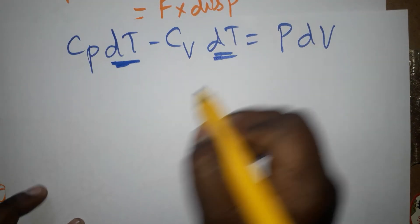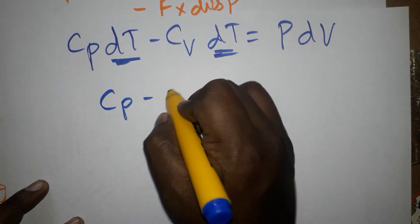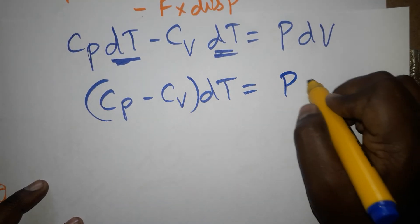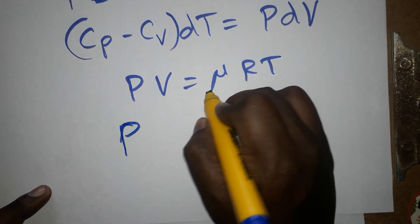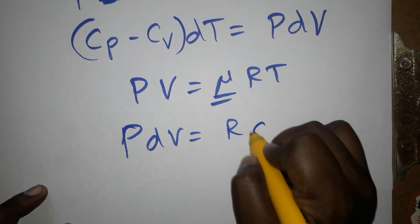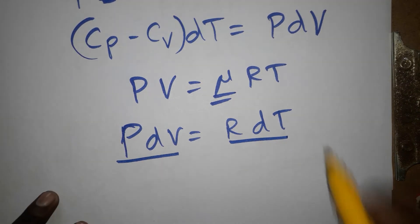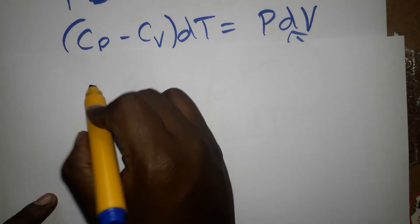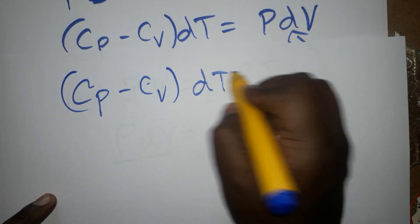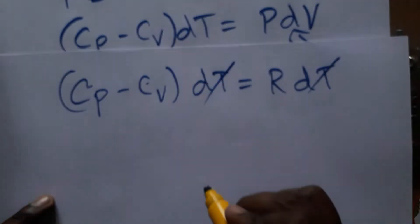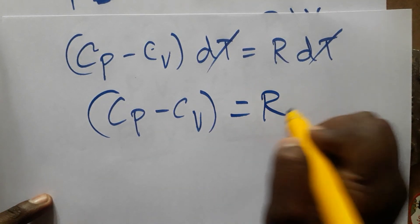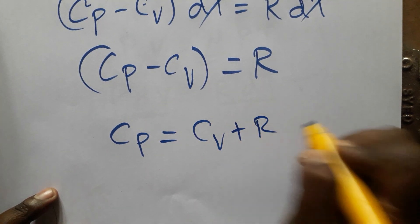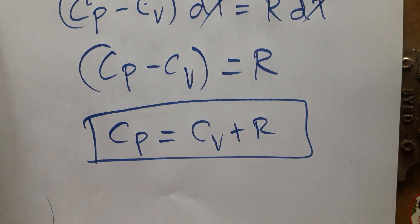Taking dT common: (Cp minus Cv)·dT equals P·dV. From the ideal gas law PV equals μRT, with molar mass taken as one, differentiating gives P·dV equals R·dT. Substituting P·dV with R·dT: (Cp minus Cv)·dT equals R·dT. The dT cancels on both sides, and finally we get Cp minus Cv equals R. Here Cp is specific heat capacity at constant pressure, Cv is specific heat capacity at constant volume, and R is the gas constant.